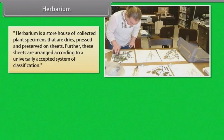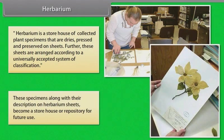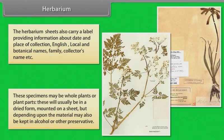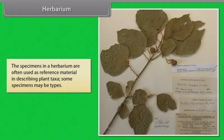A herbarium is a storehouse of collected plant specimens that are dry, pressed and preserved on sheets. These sheets are arranged according to a universally accepted system of classification. The herbarium sheets carry a label providing information about date and place of collection, English, local and botanical names, family, and collector's name. Specimens may be whole plants or plant parts, usually in dried form mounted on a sheet, but may also be kept in alcohol or other preservatives. Specimens in a herbarium are often used as reference material in describing plant taxa.